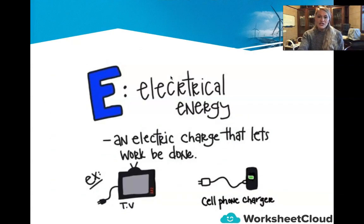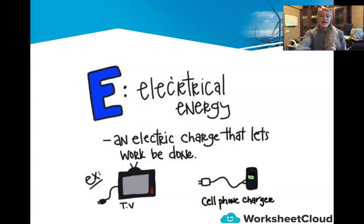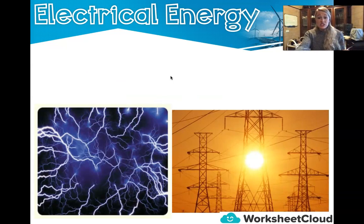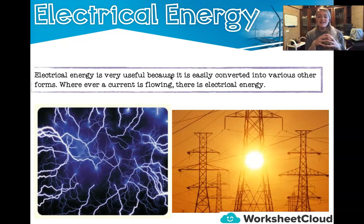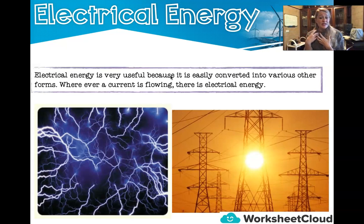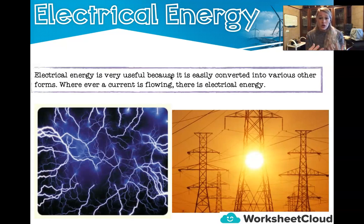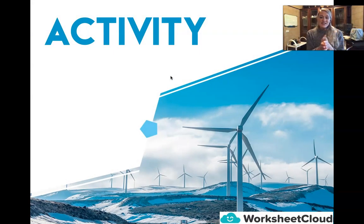Lastly, we are looking at electrical energy. As the name suggests, it involves electricity. Electrical energy is very useful because it can easily be converted into various other forms. Wherever a current is flowing, there is electrical energy. For example, the lady drying her hair — that hair dryer uses electrical energy, which converts to sound and heat energy. Any electrical device uses electrical energy passing through a current.